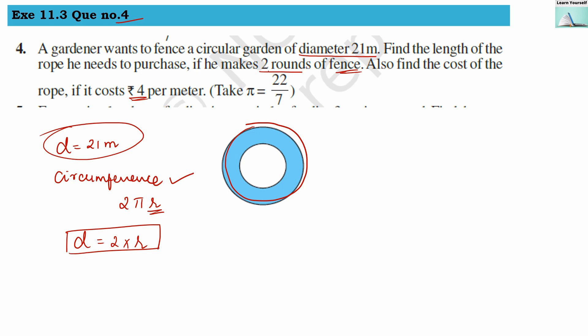They are asking that we have to tie this rope in a circular area, and that too 2 rounds. So first round, and then again we require a second round of rope. Whatever circumference we get, that will be one time the rope length required, and then we have to multiply it by 2. So we'll get to know how much rope he needs to purchase, and then we'll find out the cost of the rope.